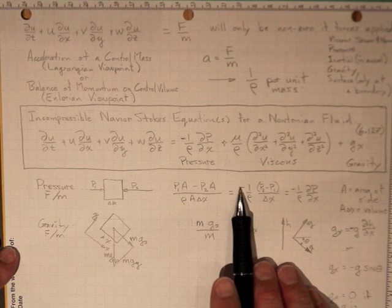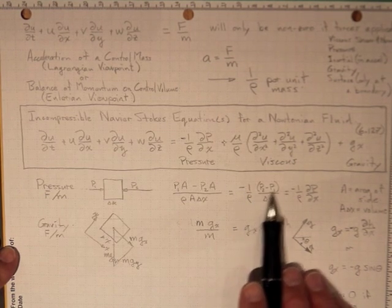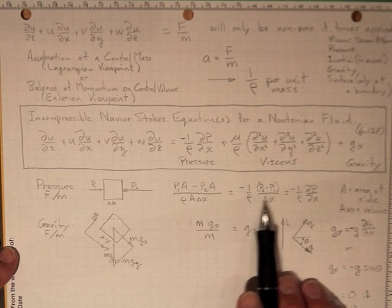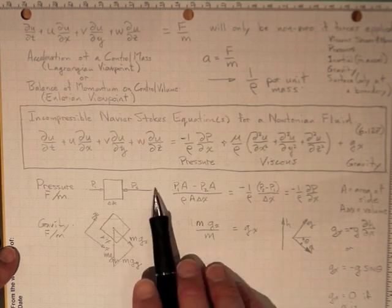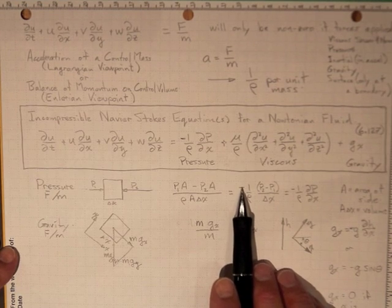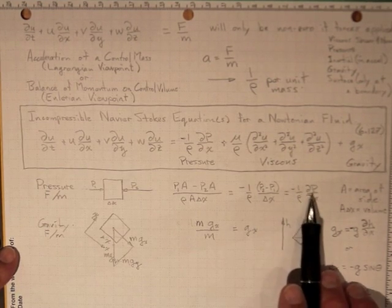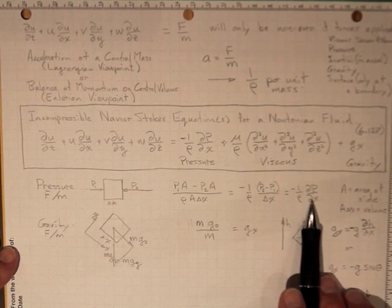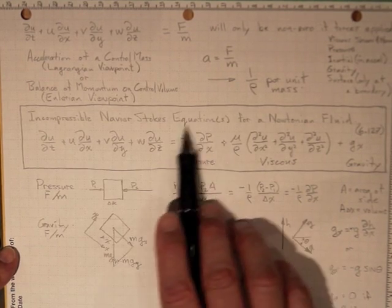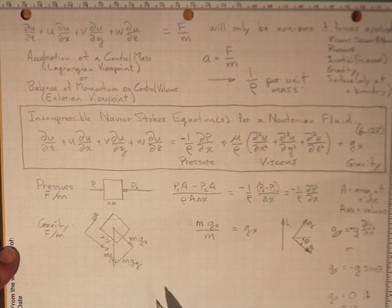If we rearrange this, we wind up with negative one over rho, P2 minus P1 over delta x. We reverse the order here, and that's where we got the negative sign. Or negative one over rho dP/dx. That term right there for the pressure force per unit mass.